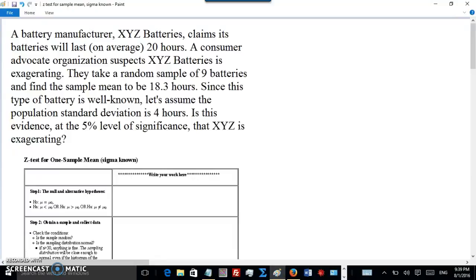Since this type of battery is well-known, let's assume the population standard deviation is 4 hours. Is this evidence at the 5% level of significance that XYZ is exaggerating?